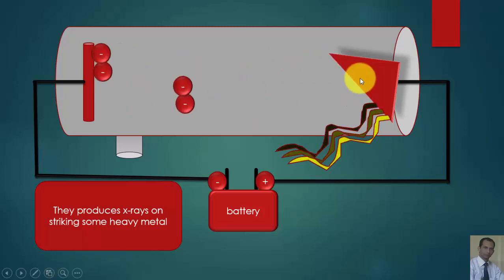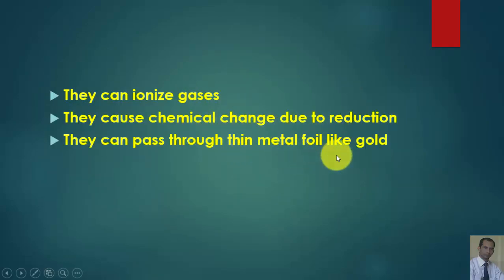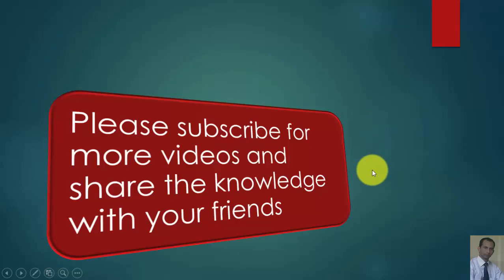They can ionize gases because of chemical change due to reduction. They can pass through thin metal foil like gold, and greenish fluorescence is observed when they strike the walls. Thank you very much for watching.